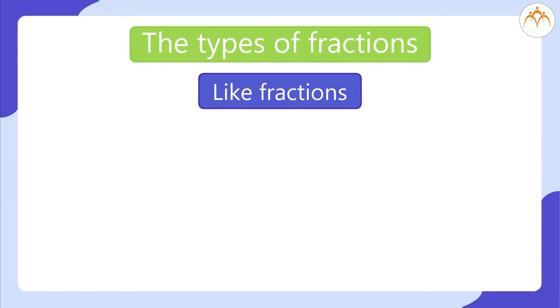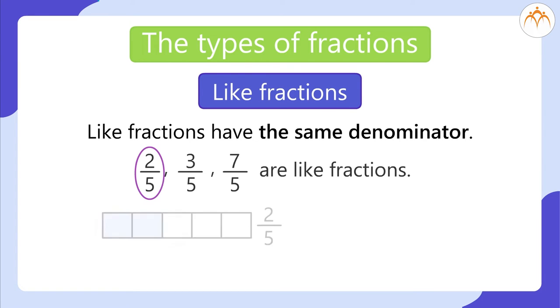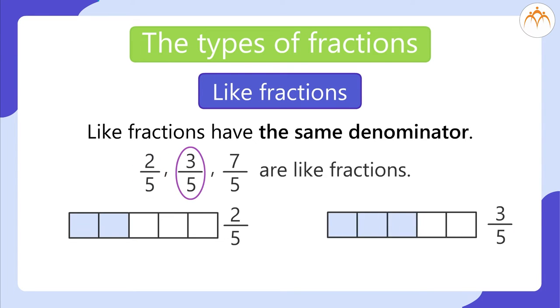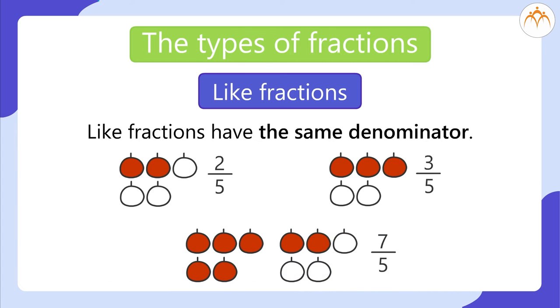Like fractions have the same denominator. For example, 2 divided by 5, 3 divided by 5, and 7 divided by 5 are like fractions.